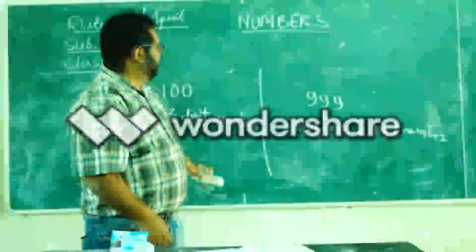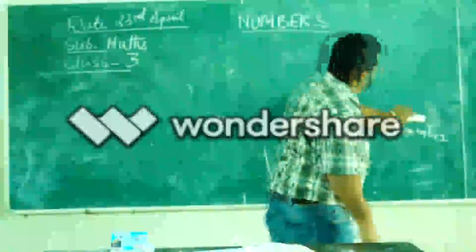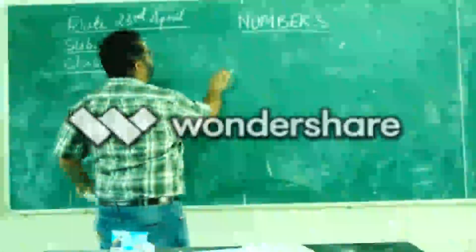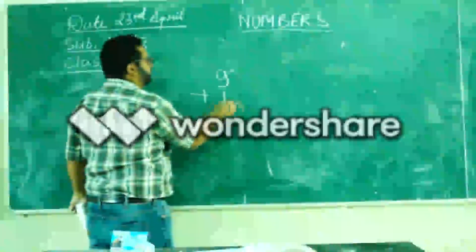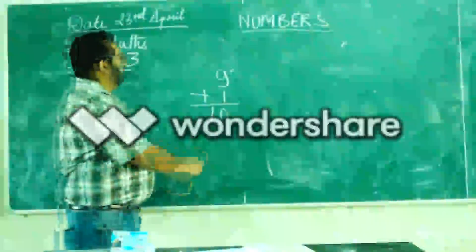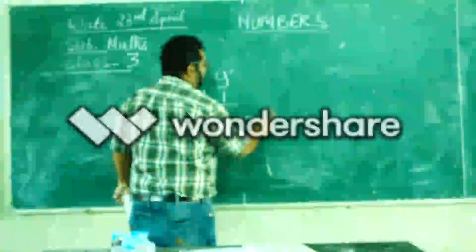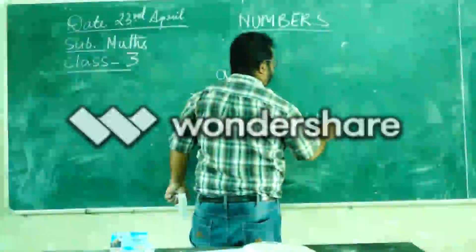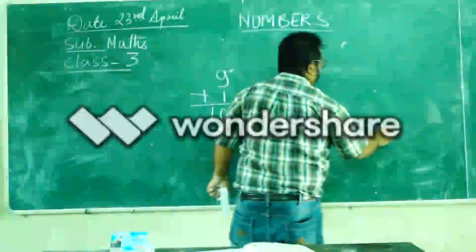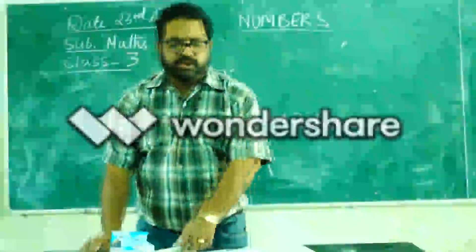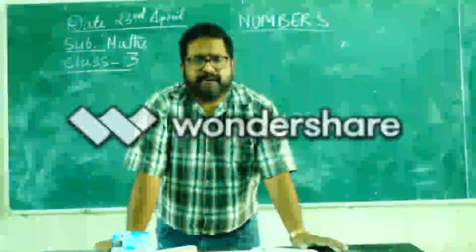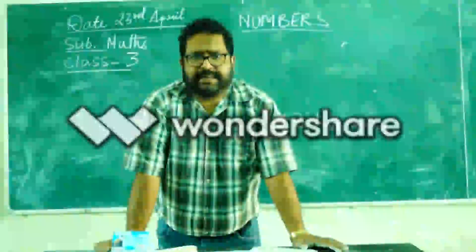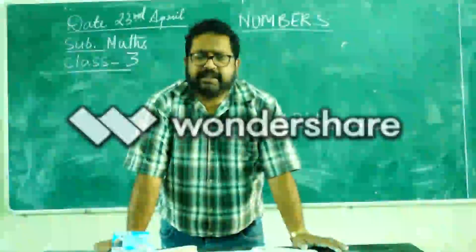Now, there are some certain things we have to keep in mind. Whenever we have a single-digit number — which is the largest single-digit number — and we add 1 to it, it becomes 10. It becomes 10, which is the smallest two-digit number. So when we add 1 to the highest single-digit number — that is 9 — we get the smallest two-digit number.